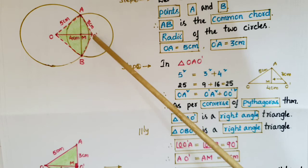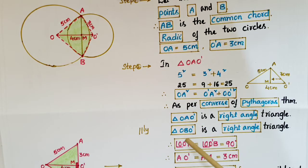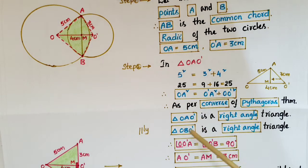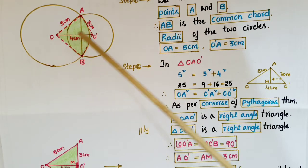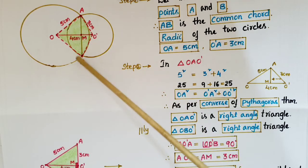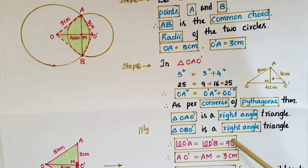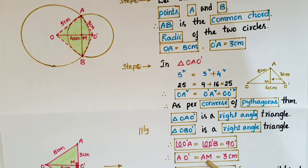Similarly we can say that triangle OBO' is also a right angle triangle. Therefore angle OO'A is equal to angle OO'B, both equal to 90 degrees. So these two angles are 90 degrees.